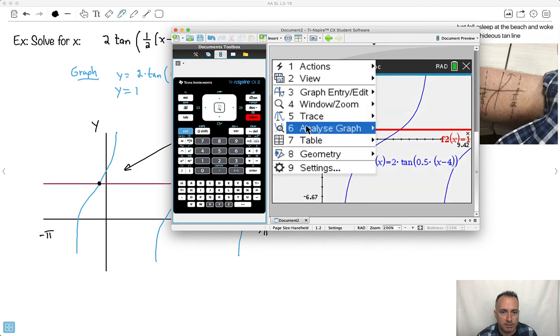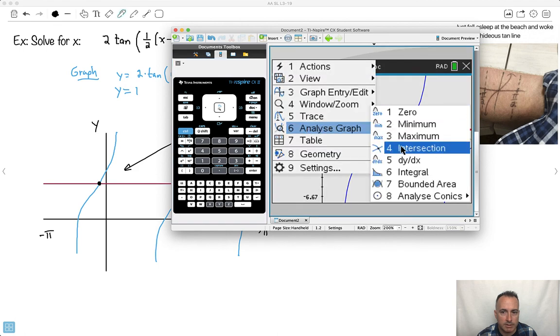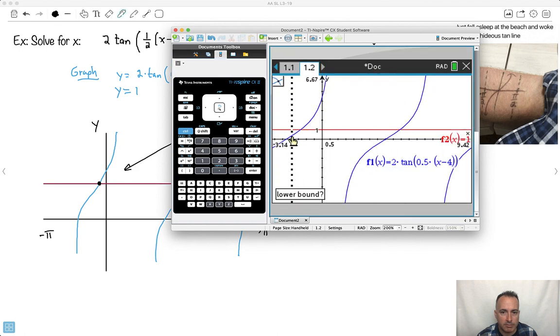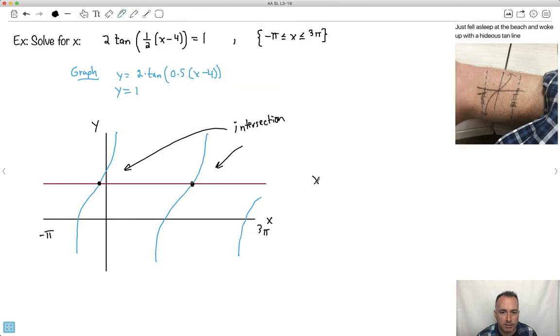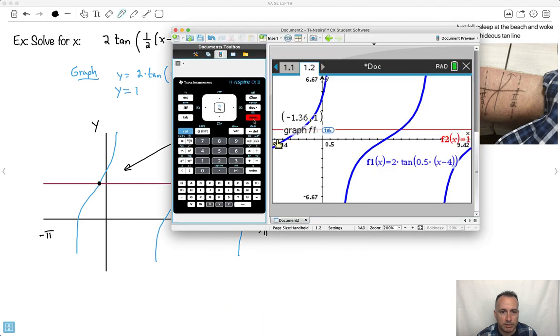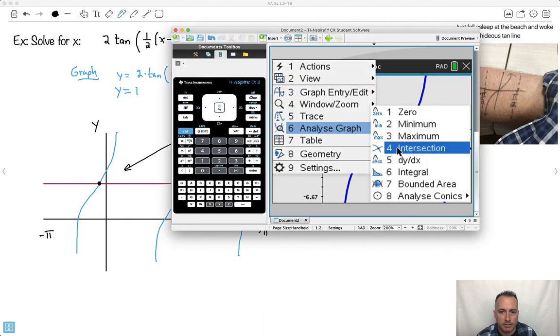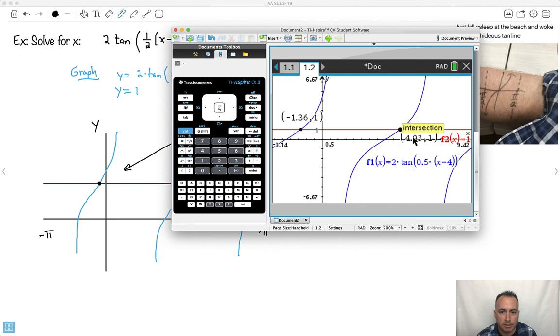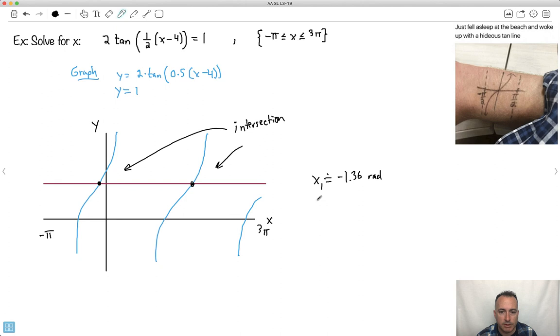So calculator, tell me, please. Menu, Analyze, Intersection. And I go from here to here. Hey, it's minus 1.36. So I'll write that down. So x1 equals approximately minus 1.36 radians. And what's my second one? I do the same thing. So Menu, Analyze, Intersection. Go from here to here, and this is 4.93. So x2 is approximately equal to 4.93 radians. There we go, we're done.